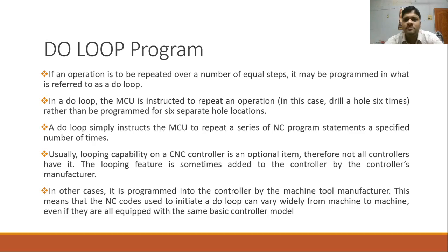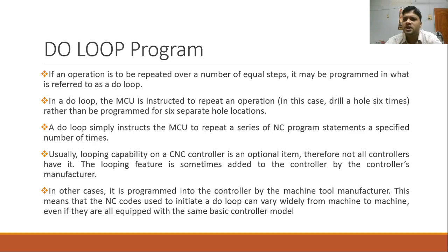When using a loop, we require some increment variable which keeps incrementing, and we require a certain end condition so that once the increment variable reaches the end condition, the loop is terminated. These are required characteristics of any loop, and similar characteristics are found in CNC programming's do loop. It is important to note that do loop is not available on all controllers. G25 is the instruction for do loop and will not be available on all controllers.